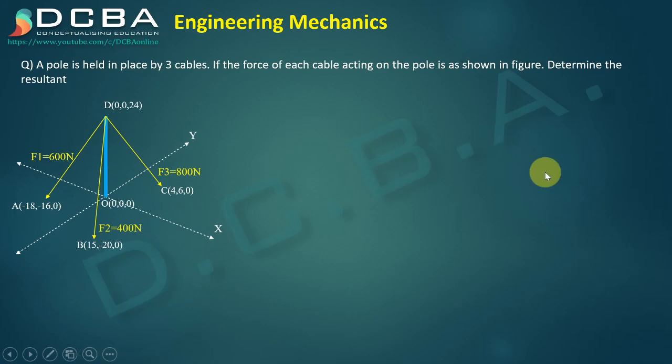In this lecture we will be solving this numerical using the 3D vector approach and we need to find the resultant of all these forces. So what we have is a pole as shown here in the blue color, and we have these three forces, three cables basically which are pulling that pole or they are holding it in place.